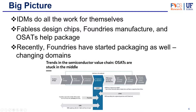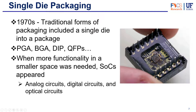So how does this supply chain affect the types of packages we're getting? Starting with single die packaging — in the 1970s, traditional forms of packaging included one single die in the package. It was in the form of PGA, BGA, DIP, QFPs, and others. If you don't know what those are, we talked about this in the first video and you should check that out.